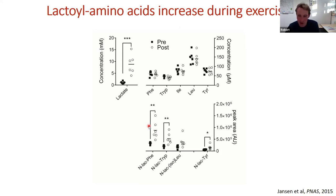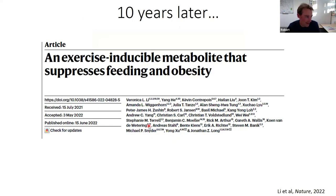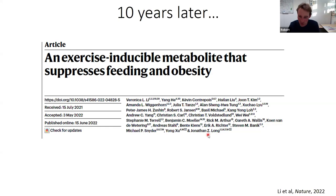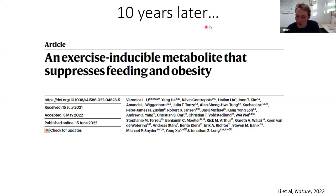The work was not in vain: a Nature paper published about a year ago by John Long's group at Stanford — which we contributed to — had mice, humans, and full-bred Arabian horses run, and found this metabolite was one of the most-changed features after exercise. Administered to obese mice, it caused them to eat less and become less obese. That concludes the first metabolite-to-protein vignette.